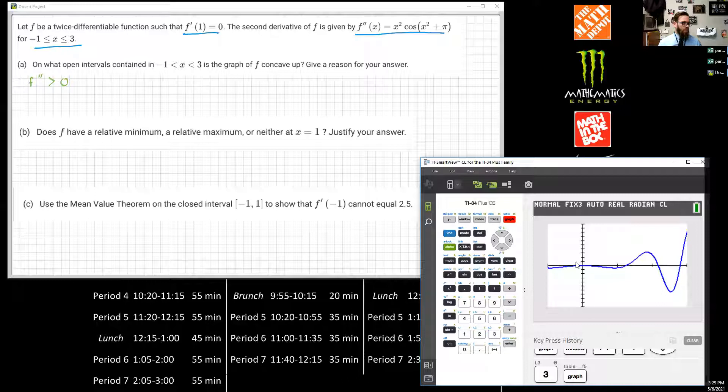Okay, so this is F''. F'' is positive wherever we are above the x-axis. So it looks like we're concaving up between these two x-intercepts and between this x-intercept, and this would be 3, because that's where we end. So we need to figure out what this x-intercept is.